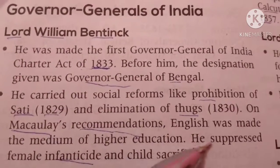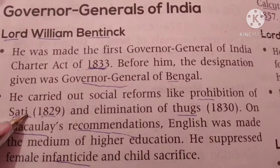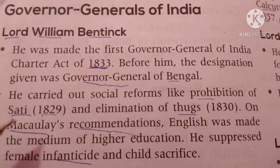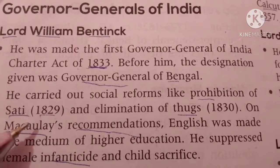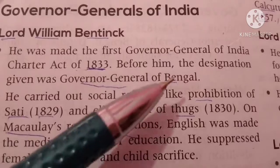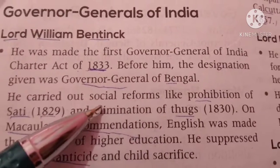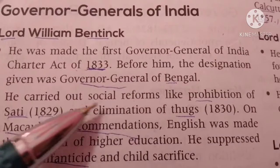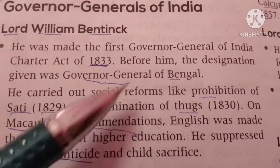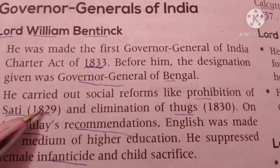Warren Hastings carried out social reforms like prohibition of Sati. When the husband died, the wife was also taken away and burned. This was a very harsh practice in the society and in India.